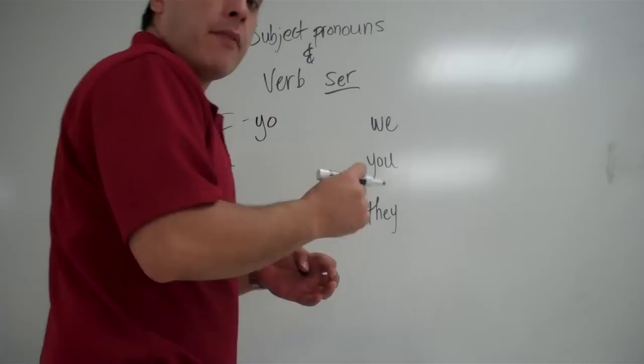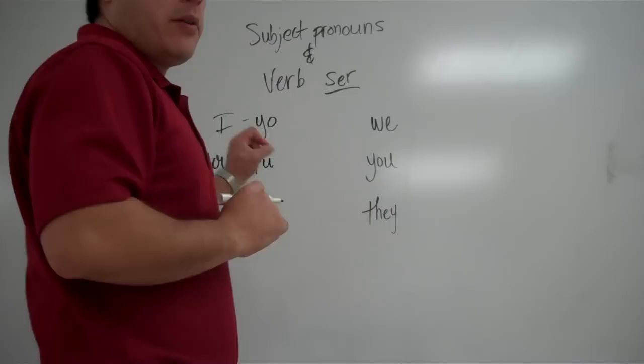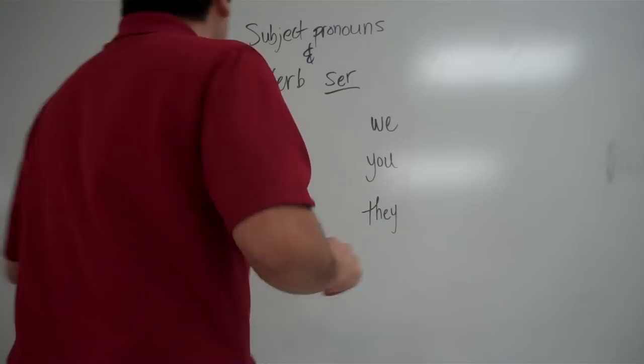So, we know I is yo. We know you, the friendly familiar form is tú. Okay, so that's the form that you would use with a classmate. That's the form that you would use with your friends. That's the form that you would use in your immediate family.